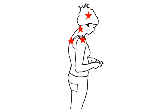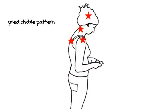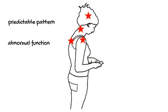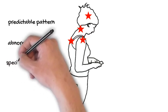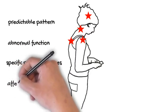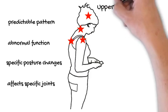In 1988, Dr. Jonda recognized and categorized a predictable pattern of muscles with abnormal function. These dysfunctional muscles then caused specific posture changes and affected certain spinal joints and the shoulder joints. Jonda called this process upper-crossed syndrome.